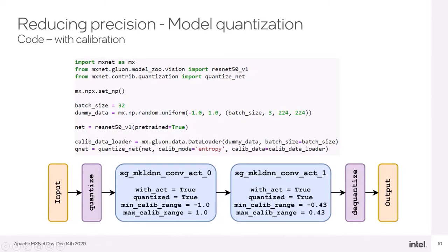In this example, we will take the advantage of calibration to get the performance boost. This code looks similar to the previous slide, but here we are utilizing gluon data loader with the calibration data. Quantize_net function parameters have changed and now we are passing calib_mode entropy and calib_data equals calib_data_loader.